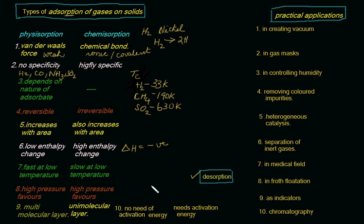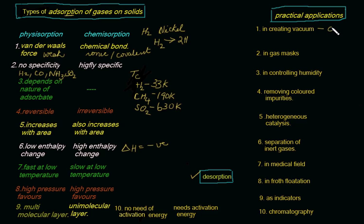Adsorption is a very important process and finds use in many processes with a large number of practical applications. Powdered charcoal can be used to create vacuum — when powdered charcoal is added to a system, the air present can adsorb onto the surface of charcoal and get removed, creating a vacuum. Charcoal adsorbs various gaseous substances.